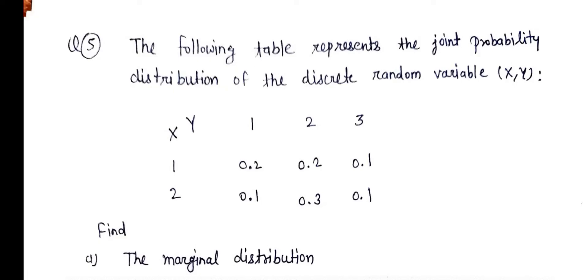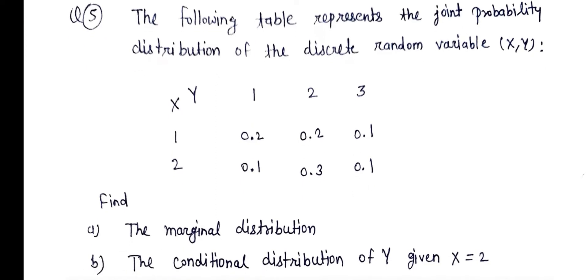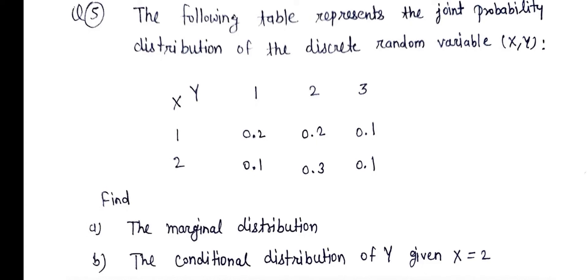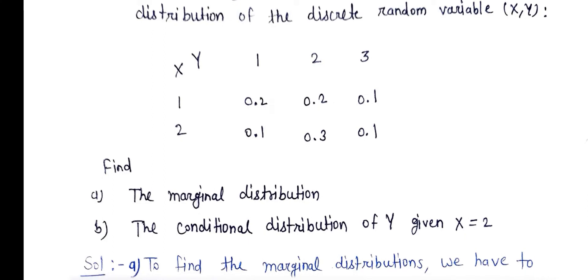The following table represents the joint probability distribution of discrete random variables X and Y. Y equals 1, 2, 3 and X equals 1, 2. Find the marginal distribution and the conditional distribution of Y given X equals 2.